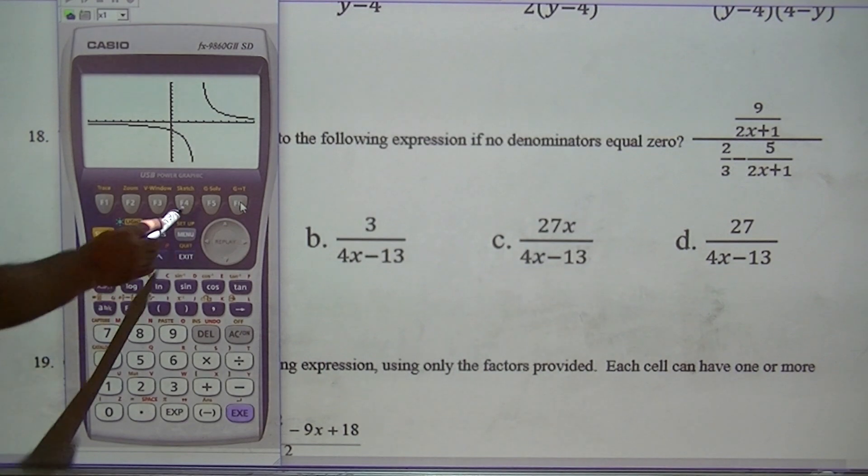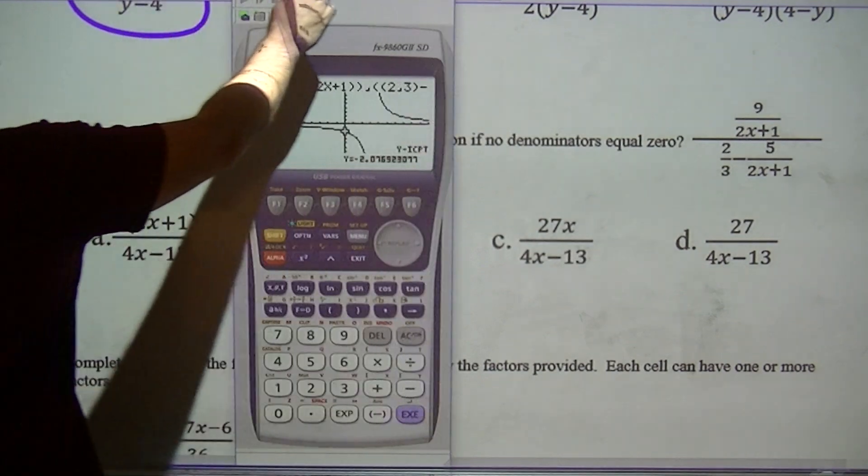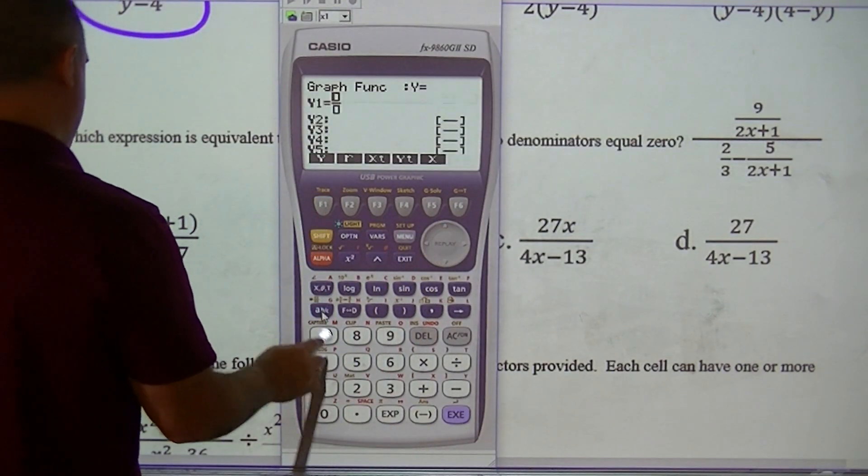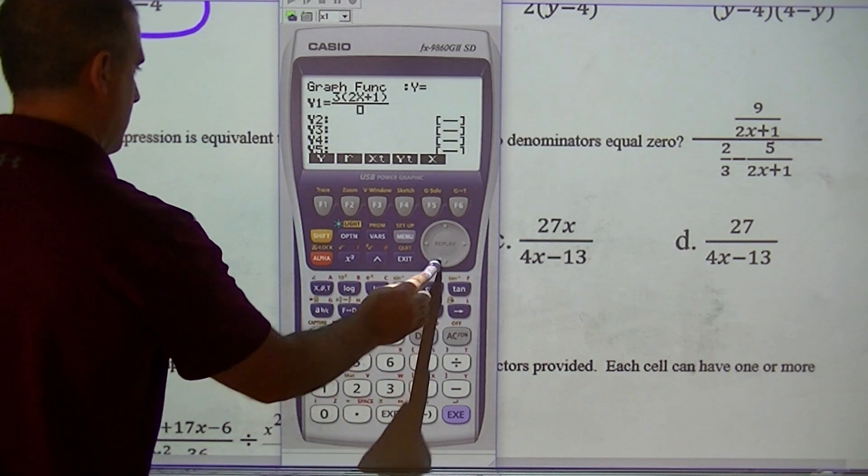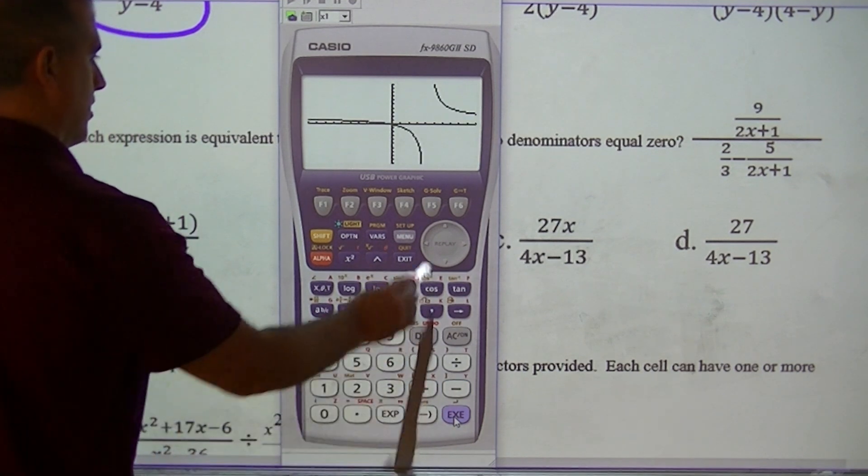Here's what my drawing looks like. G-solve y intercept. Negative 2.07. So that shape, that's what I'm going for.